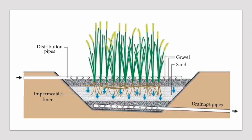The components of a vertical flow constructed wetland are very simple. It consists of an excavated basin filled with media, usually sand and gravel — a bottom layer of gravel, then sand, then a top layer of gravel. We also have reeds, plants that help in the treatment of the wastewater, and of course the distribution pipes and the drainage pipes. The wastewater is pumped into this basin through the distribution pipes and flows vertically — this is why we call it a vertical flow constructed wetland.